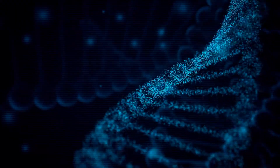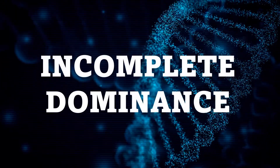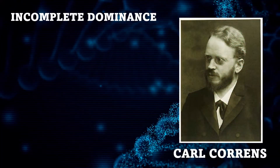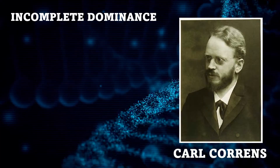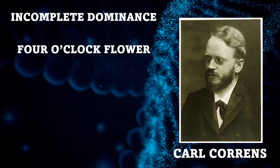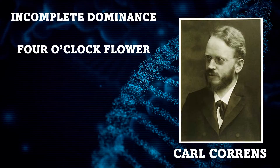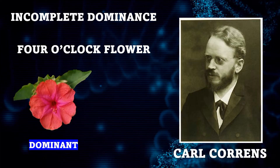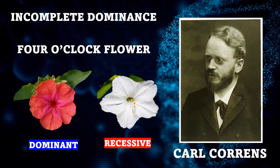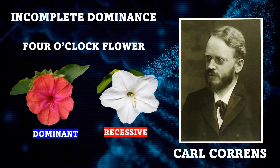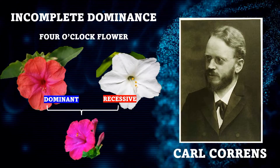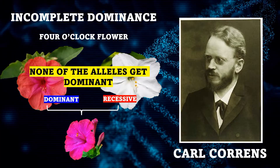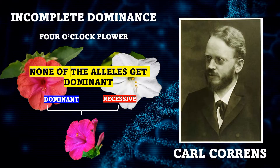After Gregor Mendel discovered inheritance law, the term incomplete dominance was proposed by German botanist Karl Correns. Keeping Mendel's work under consideration, Karl Correns experimented on four o'clock flowers. He crossbred two true-breeding flower traits — the red color as the dominant allele and the white color as the recessive allele. The result shows an intermediate heterozygote with pink color flowers, showing that none of the alleles get dominant. This situation in inheritance is known as incomplete dominance.